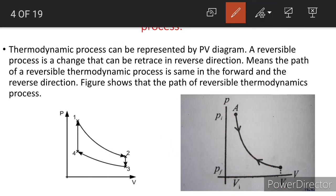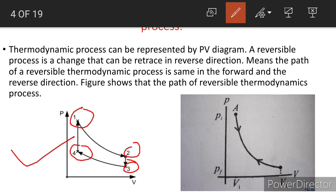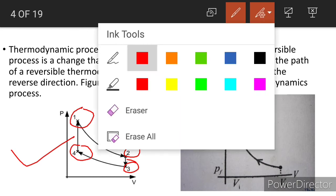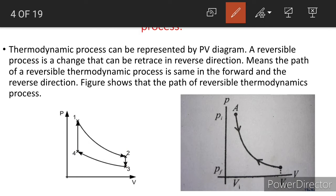This figure also shows the PV diagram of a reversible thermodynamic process. Here both the system and surroundings return to their original state with no other changes anywhere. See here: this is state one, state two, state three, and state four. Both the system and surroundings return to their initial states at the end of the reverse process. The path of the reversible thermodynamic process is the same in the forward and reverse directions.